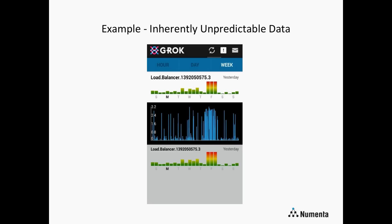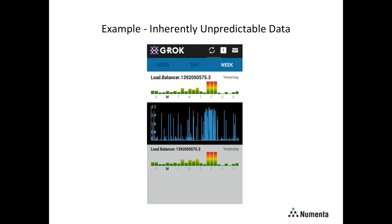This is a screenshot from the Grok mobile application showing latencies in a load balancer — a fairly unpredictable data stream shown in blue. Grok feeds these through the HTM learning algorithms to compute raw anomaly scores, which go fairly high on a regular basis. After computing the anomaly likelihood — shown in the colored bars — Grok was able to detect the anomalous period with very high confidence, seen in the three red bars where there's a higher density of latency spikes. It didn't flag earlier periods as anomalous because those high scores are normal behavior for this data stream, reducing false positives in noisy data.